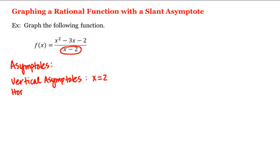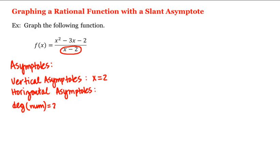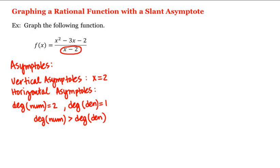What about any horizontal asymptotes? Let's first notice that the degree of the numerator is equal to 2 and the degree of the denominator is equal to 1. Therefore, the degree of the numerator is greater than the degree of the denominator, and therefore in this case there is no horizontal asymptote.